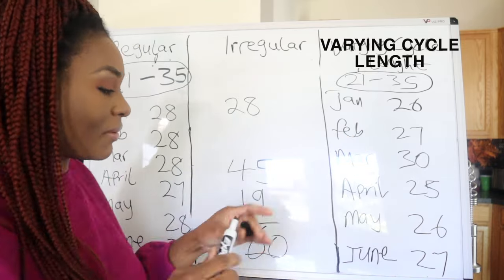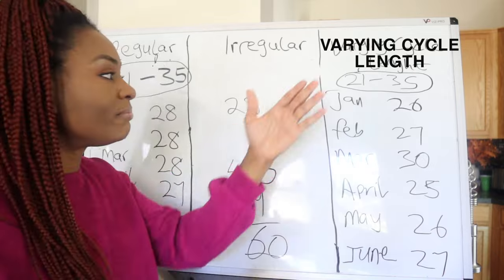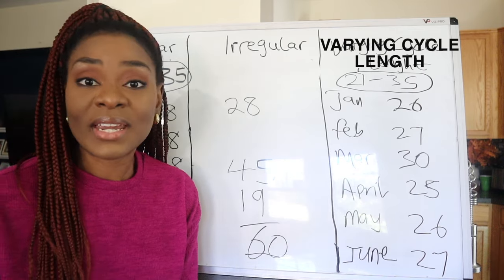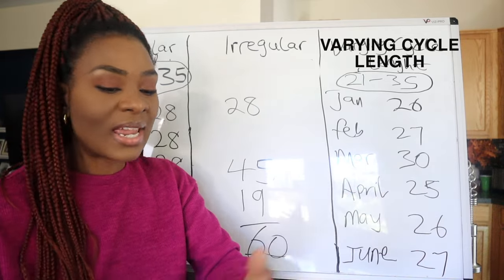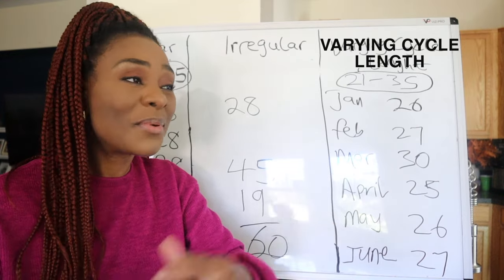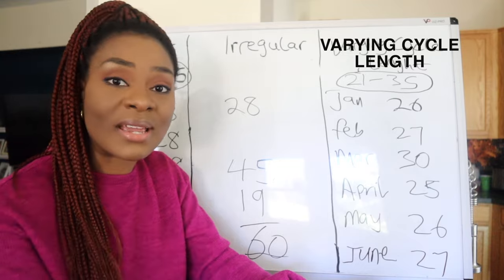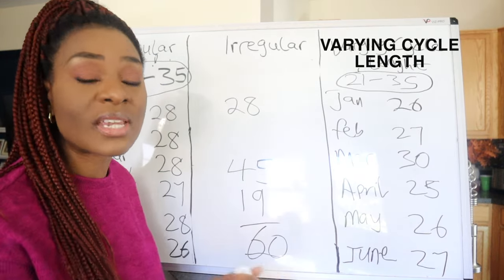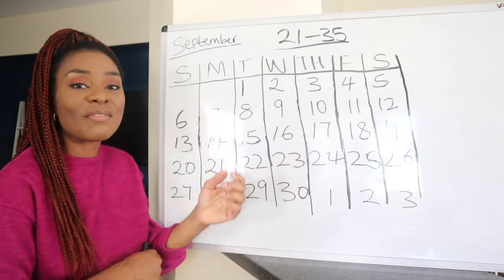What you're experiencing is cycle length variation. I've definitely experienced this myself — before kids I had a clockwork regular cycle, but once I started having kids and breastfeeding my cycle switched. This can be caused by stress, breastfeeding, or even the weather. A lot of things affect your hormones. But if it stays within 21 to 35 days, you still have a normal regular cycle.